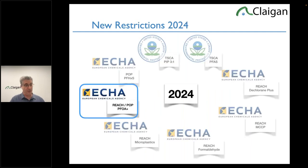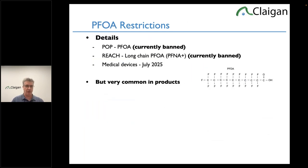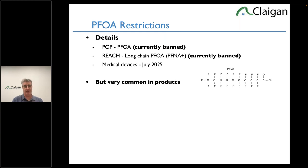PFHxS isn't present in modern products because it's actually not a degradation path for anything modern — maybe from old firefighting foam a couple decades ago, but not anymore. Now for the REACH/POP crossover on PFOA and longer chains: it's much easier to get a REACH restriction first, then transfer to POP. PFOA started as a REACH restriction and eventually moved to POP; the longer-chain versions are currently a REACH restriction. PFOA (C8) is currently banned, as are longer versions: PFNA (C9), PFDA (C10).